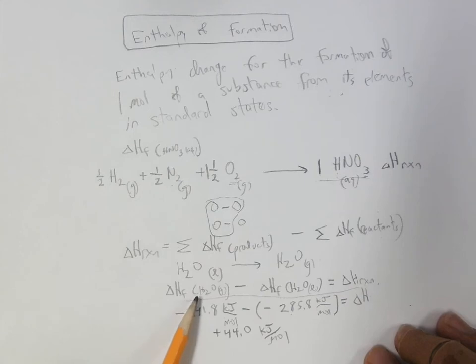So if you wanted to take one mole of liquid water and turn it into one mole of gaseous water, you'd have to put in 44 kilojoules of energy.